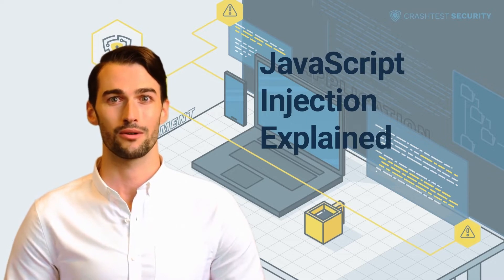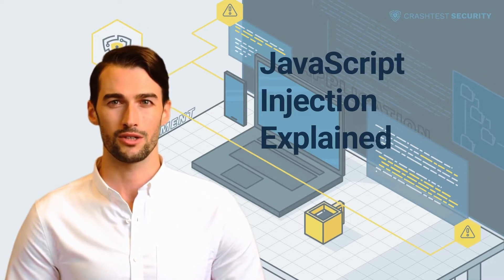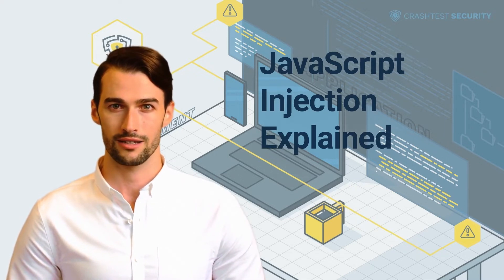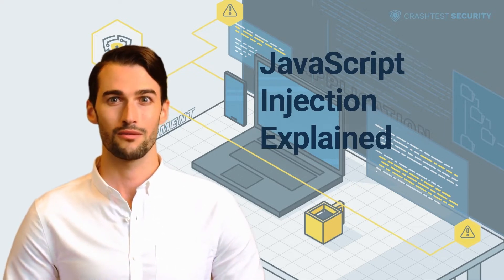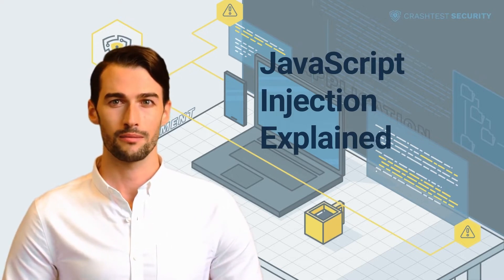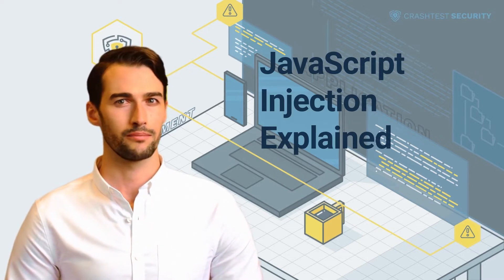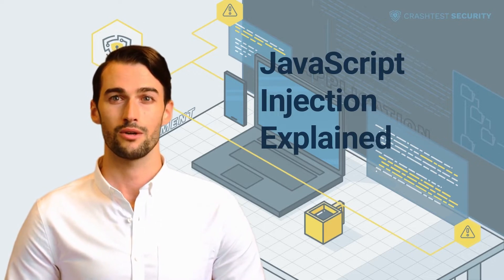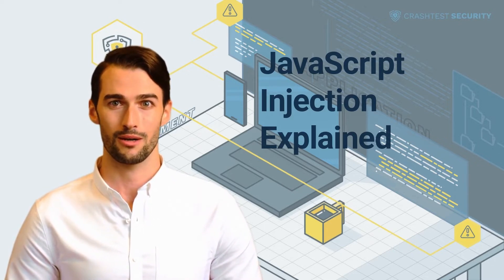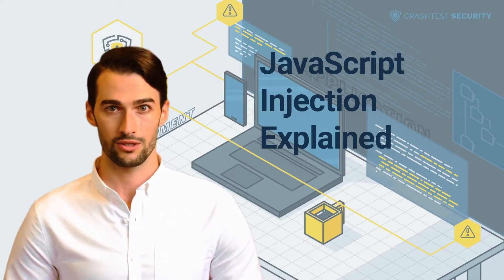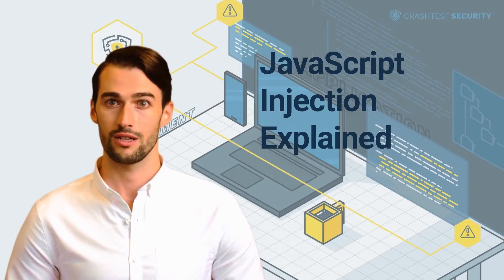An injection vulnerability allows a malicious actor to inject harmful code into a system through another application. Hackers typically use injection attacks to access the backend server configuration, shell commands, or OS calls when the application fails to validate user input adequately. Since the web application accepts untrusted user data as part of a query or command, injection attacks allow for arbitrary dynamic code execution and user session hijacking.